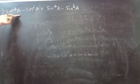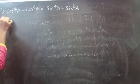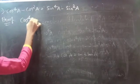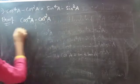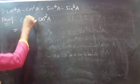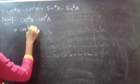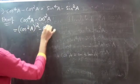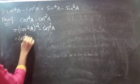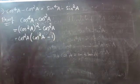Prove that cos power 4A minus cos square A equals to sin power 4A minus sin square A. Let's consider the LHS part, that is cos power 4A minus cos square A. You can write cos power 4A as cos square A whole square minus cos square A. So from these two you can take cos square A common, so cos square A into cos square A minus 1.